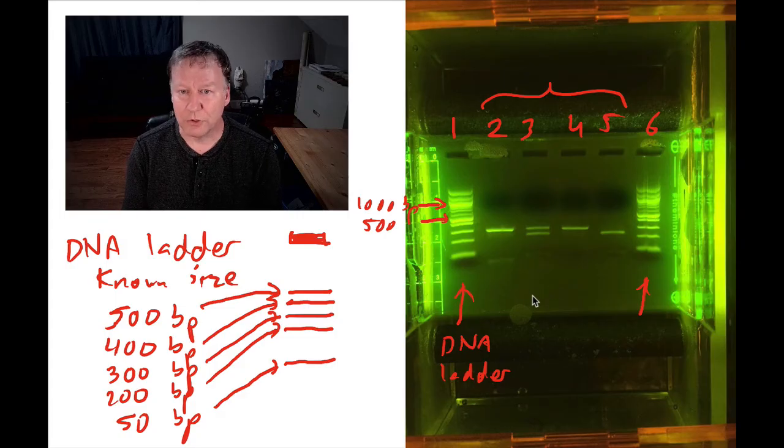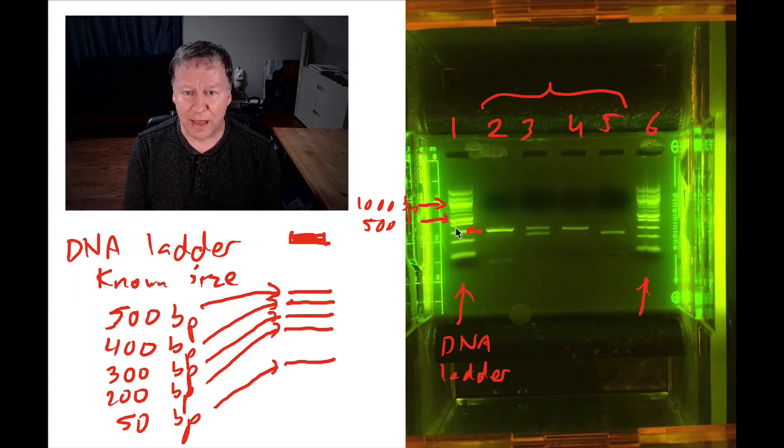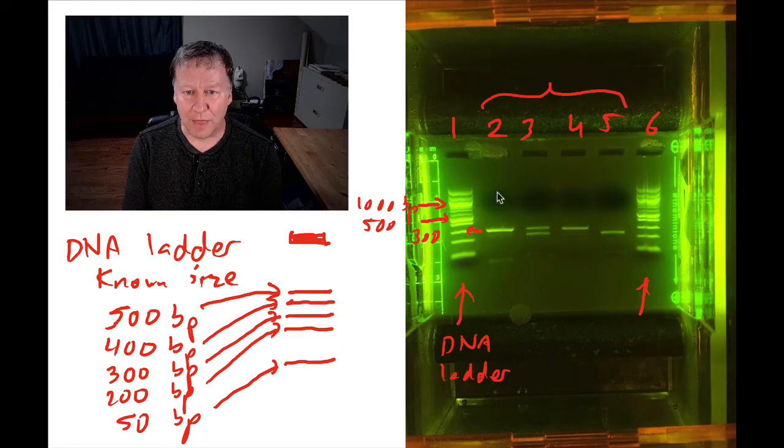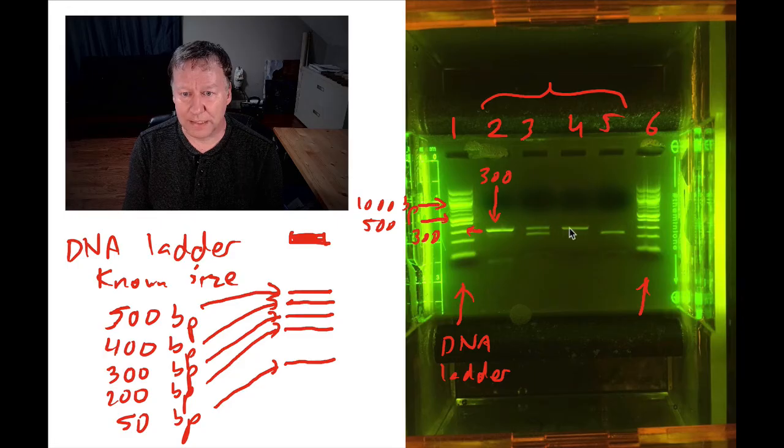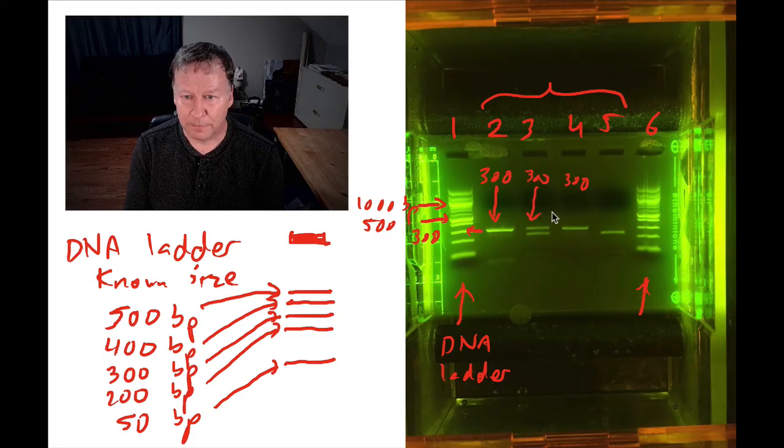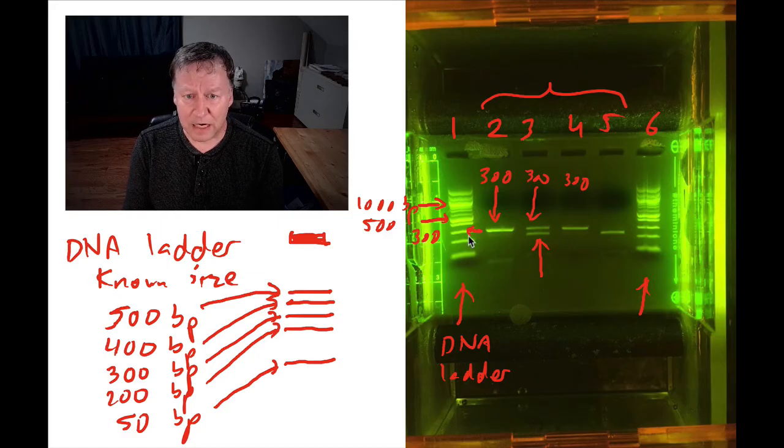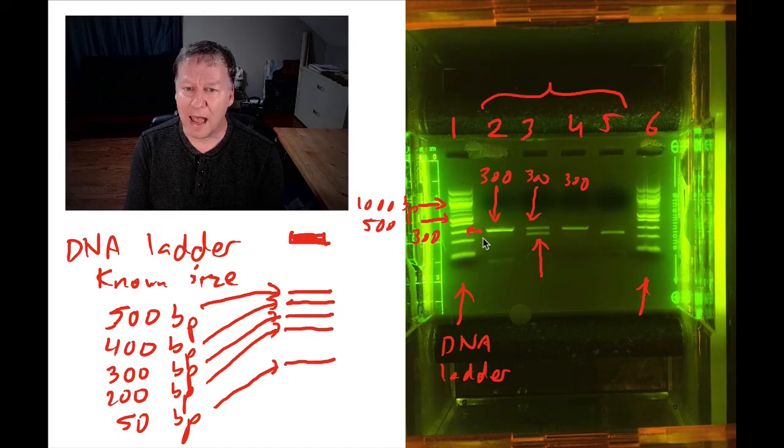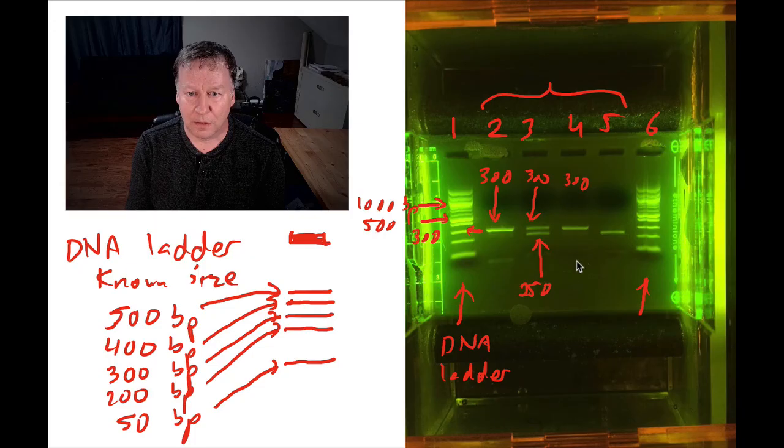So now that I have my ladder, I can go over to my unknown values in lanes two through five and start doing some comparisons. When I look at lane two, I see that it is the same size as this band right here in the ladder. I know that one is 300 base pairs. So that means that piece is also 300 base pairs in size. Lane four was the exact same size. So that one is also 300. The top piece in lane three is also 300. So I'm starting to get exact sizes. If I look at this bottom-most one in lane three, I start to realize this is kind of between my 300 and 200. It looks about halfway in between to me. So I think that one is probably about 250 base pairs. And lane five also looks like about 250 to me.